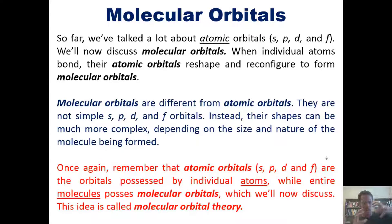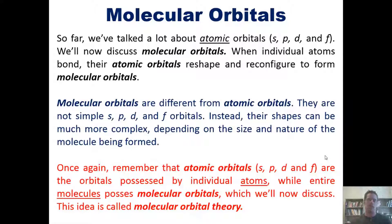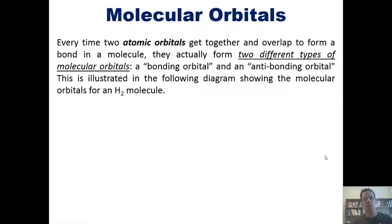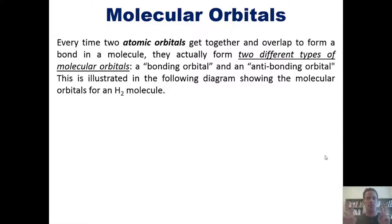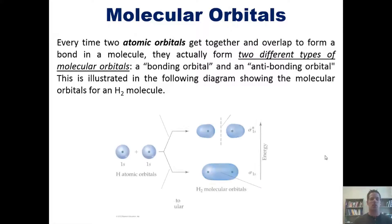This idea that individual atomic orbitals come together when atoms bond to form new molecular orbitals is called molecular orbital theory. Every time two atomic orbitals overlap to form a bond in a molecule, they form two different types of molecular orbitals: one called a bonding orbital and another called an anti-bonding orbital. This is illustrated in the following diagram showing the molecular orbitals for an H₂ molecule.